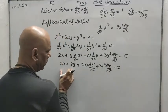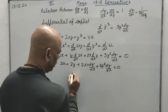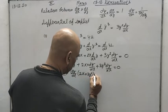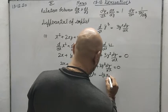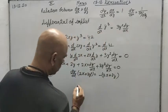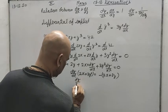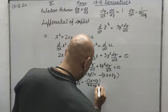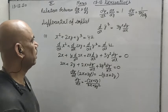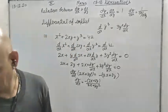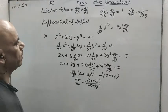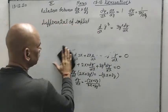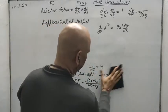Now all the terms not containing dy by dx will go to the other side. Taking dy by dx common from the remaining terms: dy by dx times (2x plus 3y squared) equals minus 2x plus 2y. So in the end, dy by dx equals (minus 2x plus 2y) upon (2x plus 3y squared). Every time whenever y is involved, you will have to write dy by dx with it when differentiating y with respect to x.